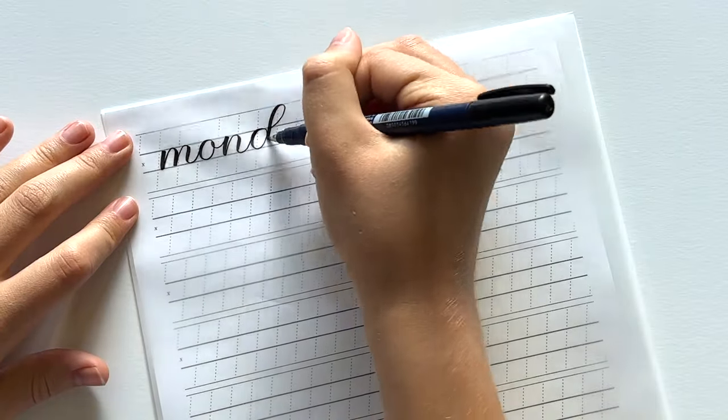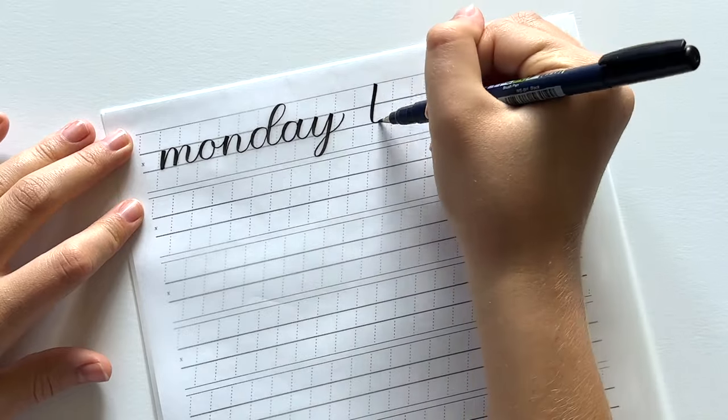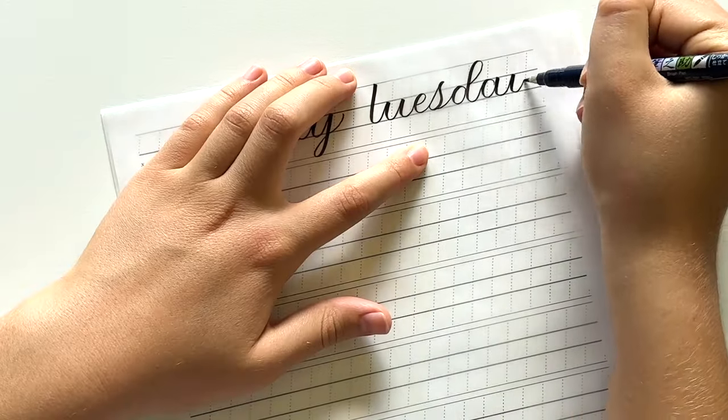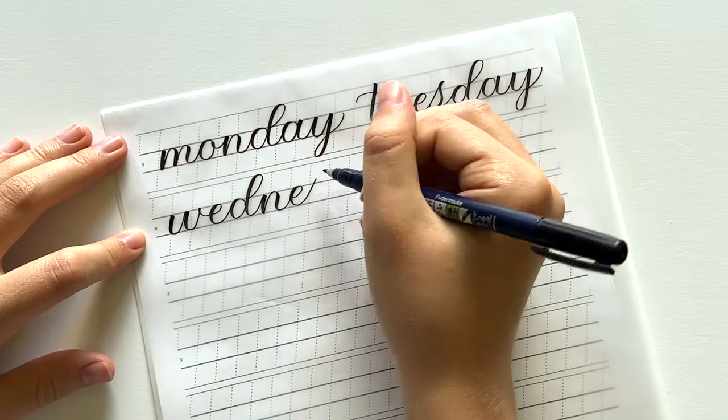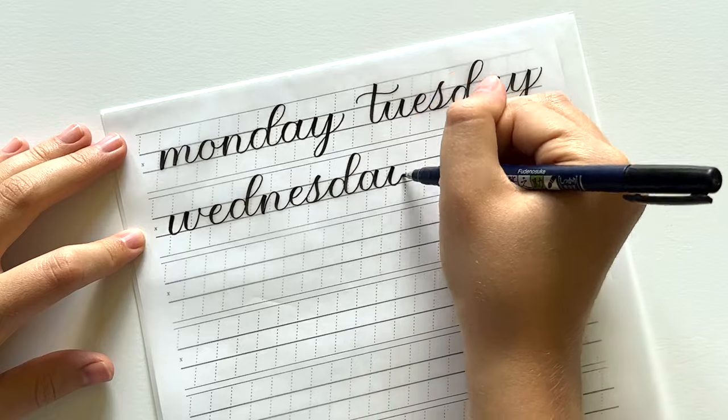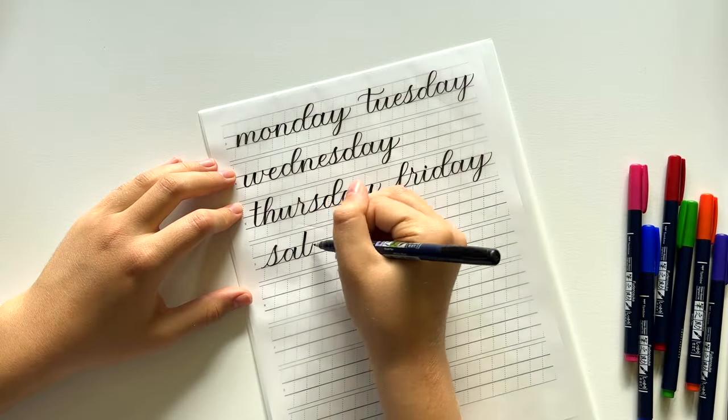And then you'll move on to writing words. Once you're writing words you can practice by just writing things. Write your to-do list. Write names. Write the days of the week. Write quotes. Once you have put it all together into writing words you can really practice in so many ways and have a lot of fun with it.